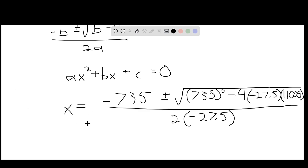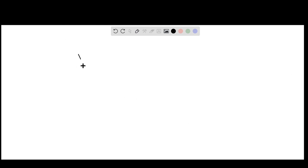Computing this with a calculator, we get the two solutions: x equals 37.43 meters and x equals negative 10.71 meters.